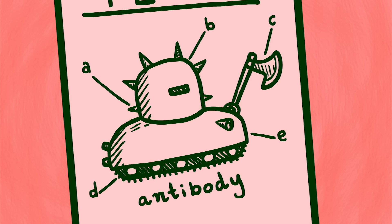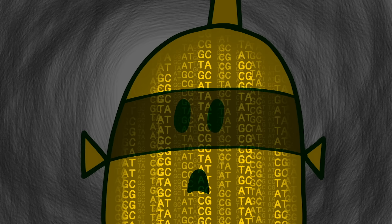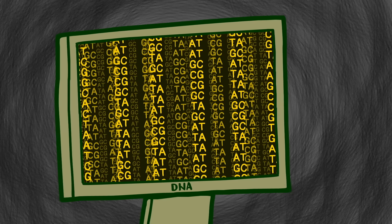It needs to make antibodies, proteins that will attack and kill the invading virus. This process starts in the nucleus. The nucleus contains our DNA, the blueprint that tells our cells how to make everything our bodies need to function.